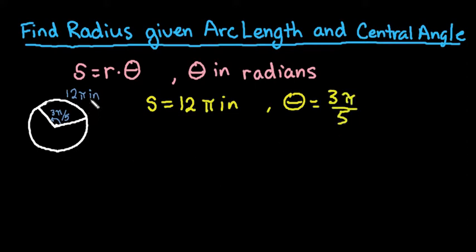So all we're going to do is take and plug in the values that we have into our equation. So we would say that S is 12 pi and we would have R times 3 pi over 5.